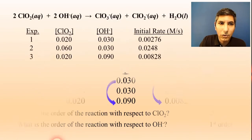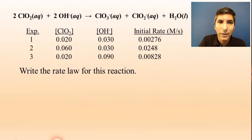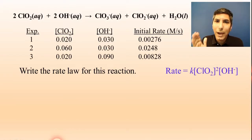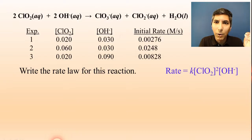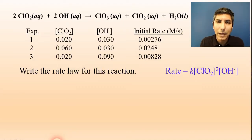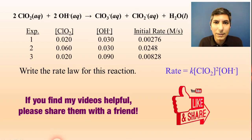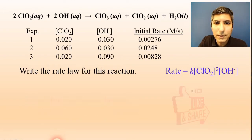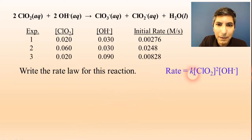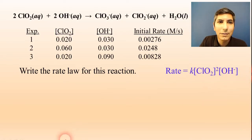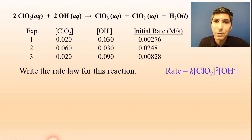Now let's use this information to write the rate law for this reaction. The rate law has to be written in a very specific format: rate equals k times the concentration of the first reactant raised to its order, which is chlorine dioxide to the second power, times the next reactant raised to its order, which is hydroxide to the first power. All we have to do is write rate = k[ClO₂]²[OH⁻]¹. You just have to remember to use the right format.